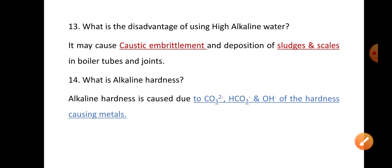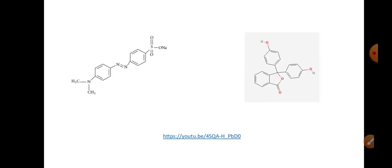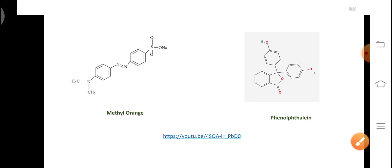What is alkaline hardness? Alkaline hardness is caused due to carbonate, bicarbonate, and hydroxyl ions of the hardness-causing metals. You should also learn the structures of the two indicators — here I am showing you the structure of methyl orange and phenolphthalein. Thank you.